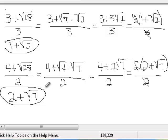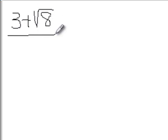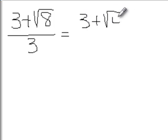Let's try one more. So I'm going to go ahead and get a new screen. And we're going to do 3 plus square root of 8 over 3. Now there's a perfect square of 4 in the 8, so I'm going to pull that out. So 3 plus square root of 4 times square root of 2 all over 3.